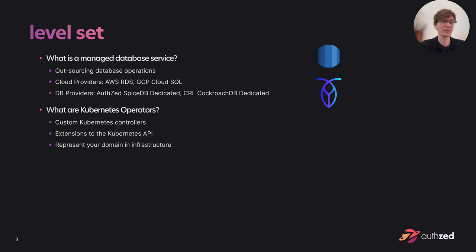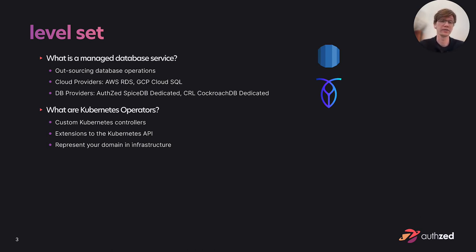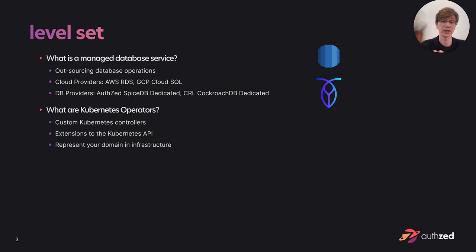Kubernetes operators are custom controllers for Kubernetes that encode application-specific logic. This means extending the Kubernetes API and teaching it about new concepts specific to your domain. The point is to improve how Kubernetes handles running that application, and more broadly, encoding your domain into Kubernetes so the control plane becomes the central interface — the source of truth — queryable with standard tools like your dashboard or kubectl.